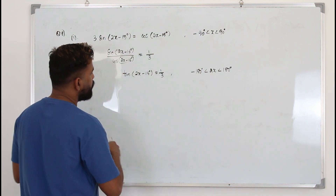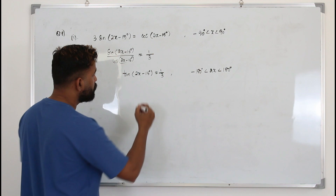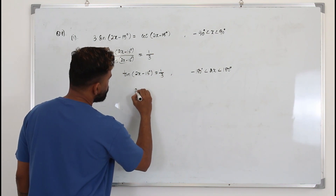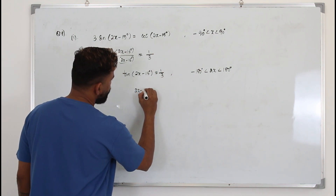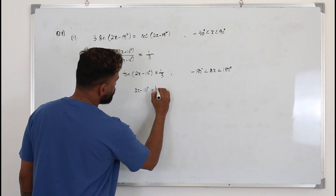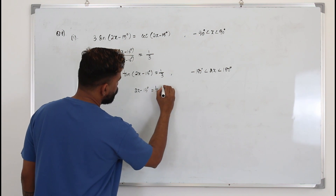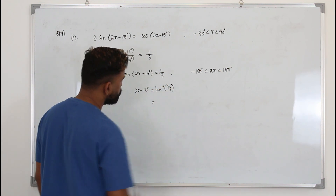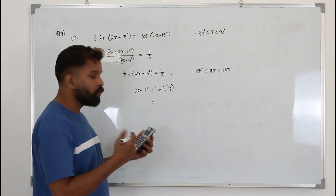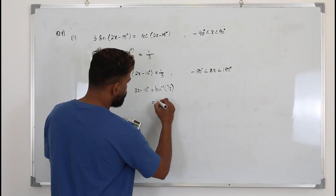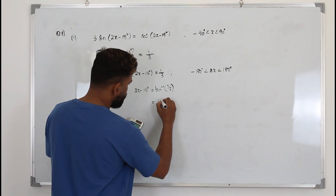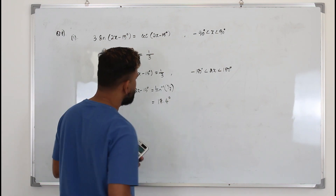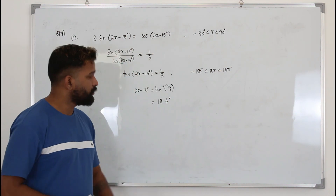Now find the principal value. Use your calculator in degree mode. So 2x minus 15 degrees equals tan inverse of 1 over 3. They want the answer in one decimal place, so that gives 18.4 degrees. That's the principal value.